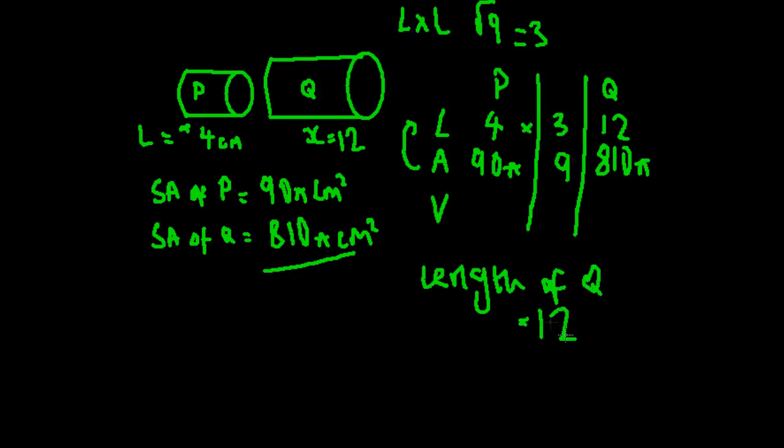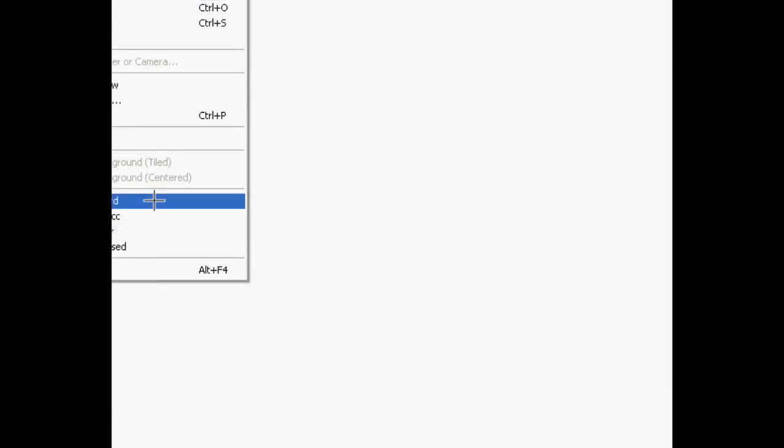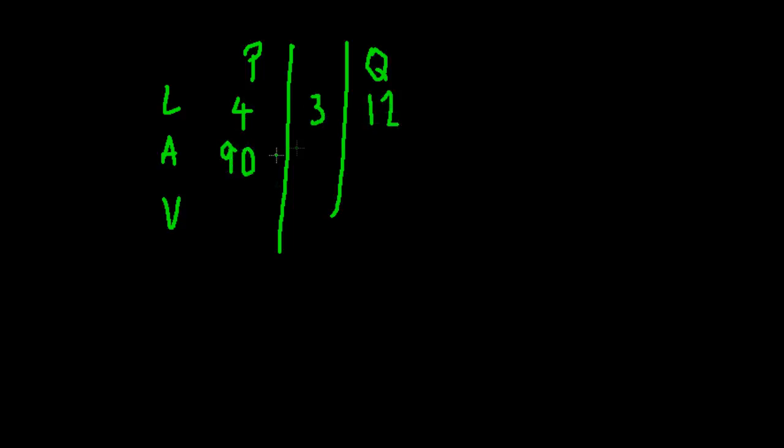Equals 12. Now I'm just going to move on to the second part of the question. The second part of the question tells us the volume of cylinder P is 100. Let me just quickly draw the table out again: P, Q, length, area, volume. This was 4, our multiplier was 3, and we got 12. We had 90 here and 810.